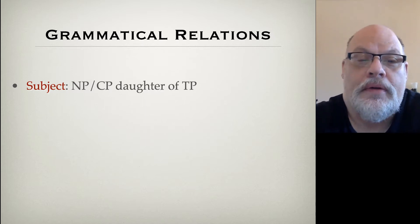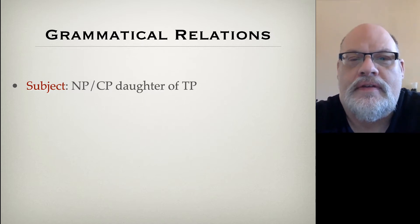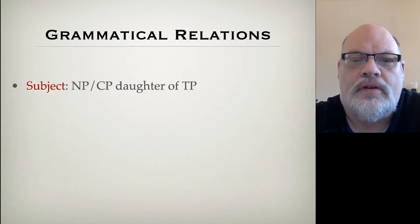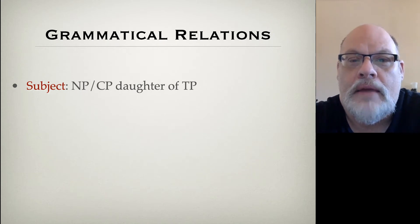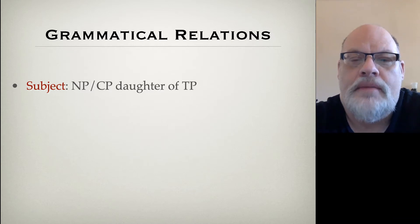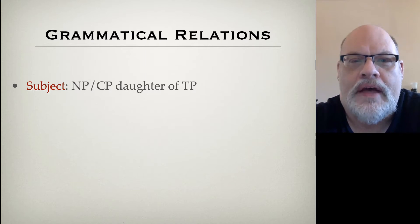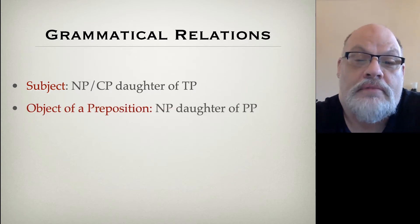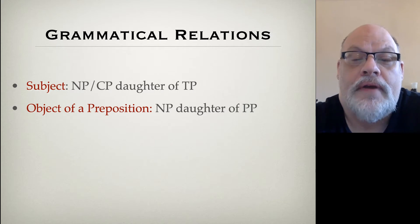For example, the subject of the sentence is either the noun phrase or CP that is the daughter of the TP. That's the notion of subject. By daughter, of course, we mean immediate domination. So what the TP immediately dominates — that's either an NP or CP — that's the subject. The object of a preposition is very similarly the noun phrase that's the immediate daughter of a PP.